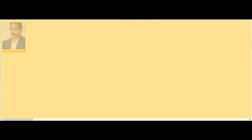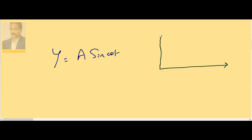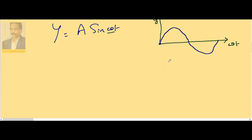Taking the displacement equation y = a sin(ωt), let us draw a graph with ωt on the x-axis and displacement on the y-axis. ωt is angular displacement, like θ. At θ = 0 the graph starts from the origin. At θ = 90°, sin 90° = 1, so the sine curve reaches maximum. It decreases and becomes 0 at 180°, and the pattern continues. This is the displacement-time graph for a particle in SHM.